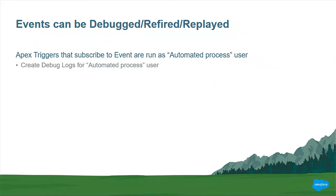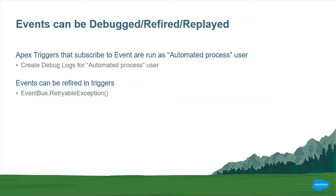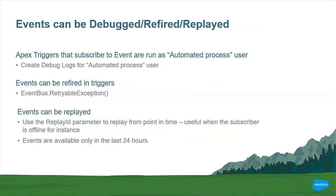The triggers you write to subscribe to events are run as automated process users, so if you want to debug them, you run the debug logs for this automated process user. Events can be refired using EventBus.RetryableException. Events can also be replayed, which is very useful — for example, if the subscriber is offline, you can use the replay ID parameter and replay from that point in time. Events are currently available for the last 24 hours.